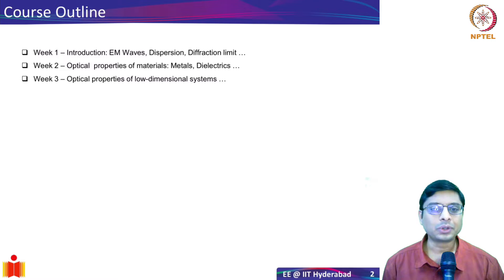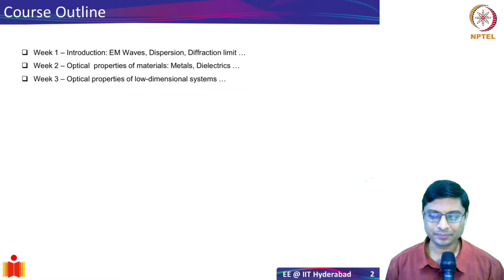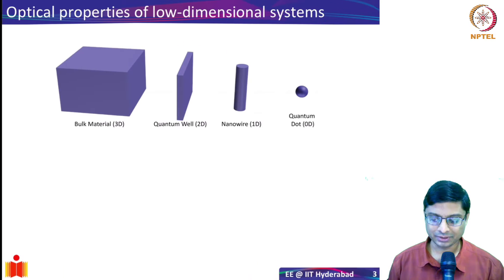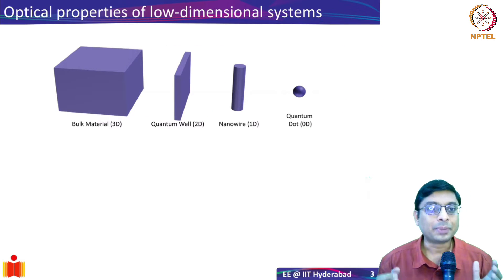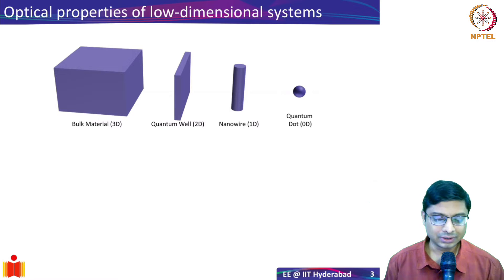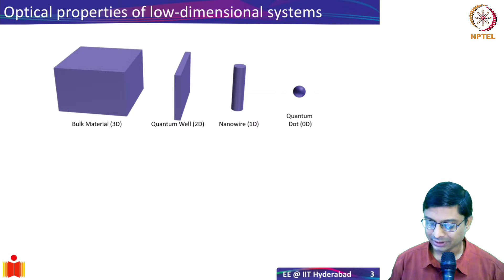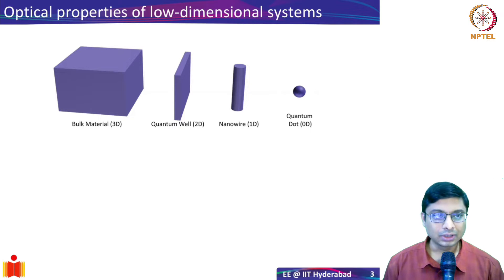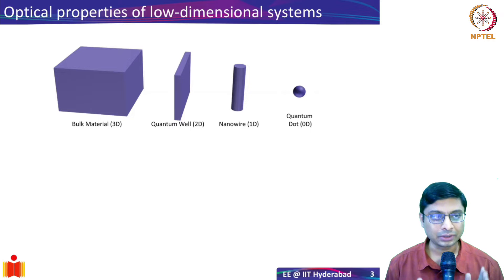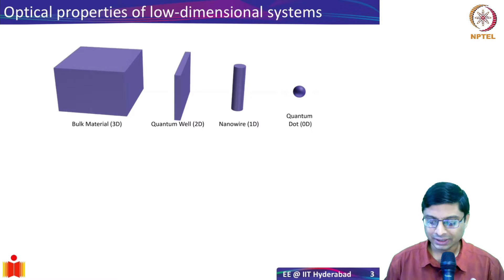In this week I want to talk about optical properties of low dimensional systems. What do I mean by low dimensional systems? If you look at bulk materials, they are three-dimensional — electrons can freely move about in all three dimensions, so we call them 3D or bulk materials.